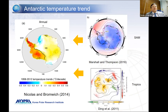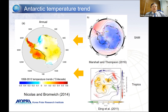On the other hand, in Antarctica, it shows a different trend. This is from Nicholas and Bromwich — surface air temperature trend from 1958 to 2012. It shows rapid warming in West Antarctica, but very little warming in East Antarctica, even some cooling. It's part of the Weddell Sea and Victoria Land. People try to illustrate this asymmetric feature using, like Marshall and Thompson, who attributed this to changes in the Southern Annular Mode.